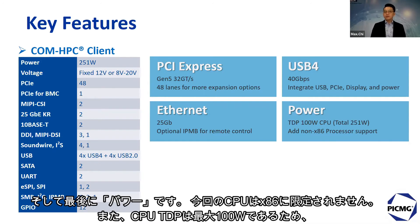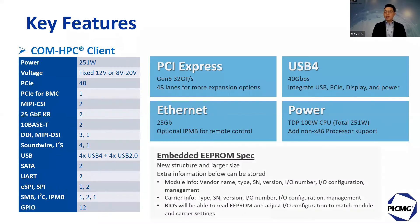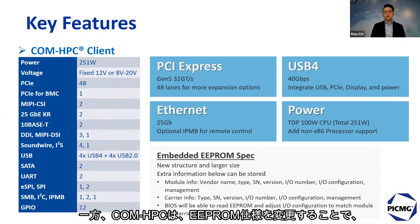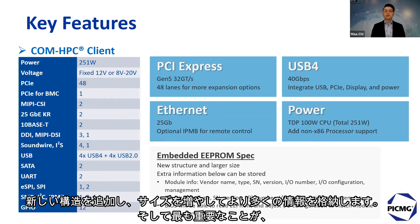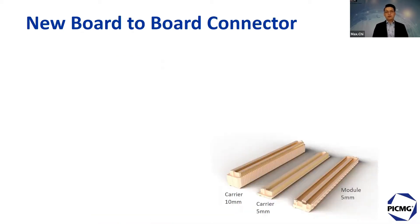Last is power. This time, ComHPC is not limited to x86 processors. Because the CPU TDP is supported up to 100W, you can use more powerful processors like desktop CPUs to have higher performance. On the other hand, ComHPC also modifies the embedded EEPROM spec to add a new structure and increase the EEPROM size to store more information. The BIOS will be able to read EEPROM and adjust I/O configuration to match module and carrier settings.